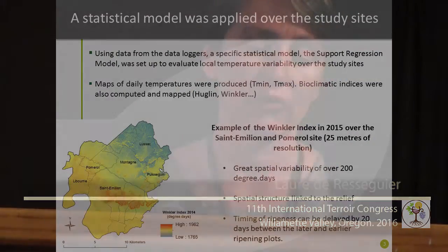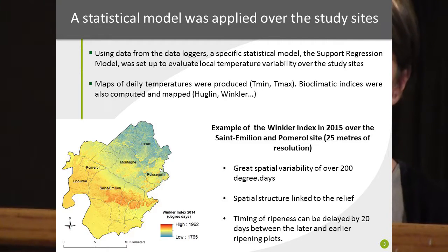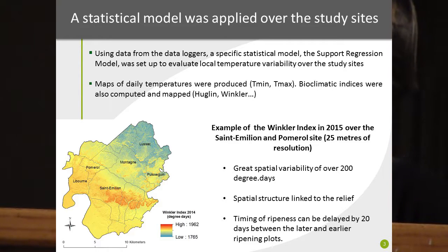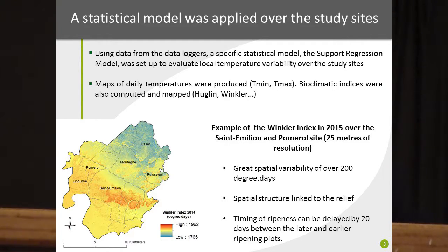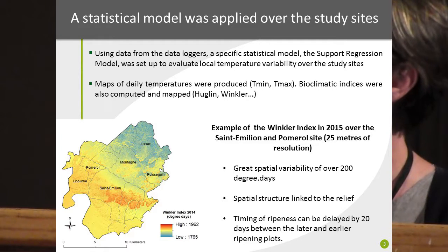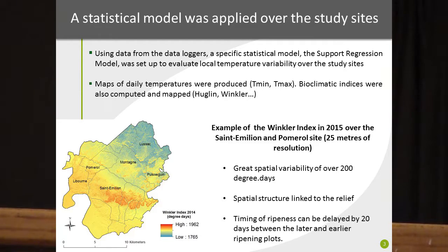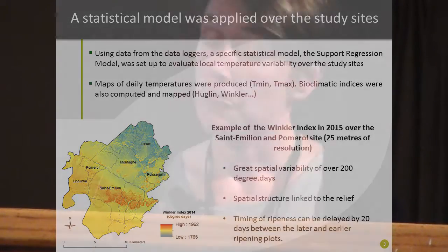With this model, we can create maps of daily minimum and maximum temperature, and by combining these temperature maps we can create bioclimatic indices like the Winkler index. Here I present the Winkler index in 2015 over the Saint-Emilion and Pomerol sites at a resolution of 25 meters. There is a great spatial variability of over 200 degree-days, and a spatial structure linked to relief: the limestone plateau of Saint-Emilion and its south-facing slopes are the warmest, while the northeast and valley bottoms are the coolest.